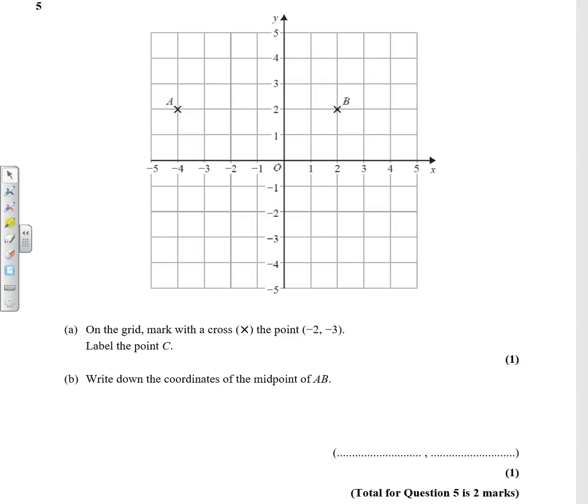Okay, coordinates question. On the grid, mark with a cross the point (-2, -3) and label it C. So minus 2, we go across 2, down 3. So C is there. Make sure you label it.